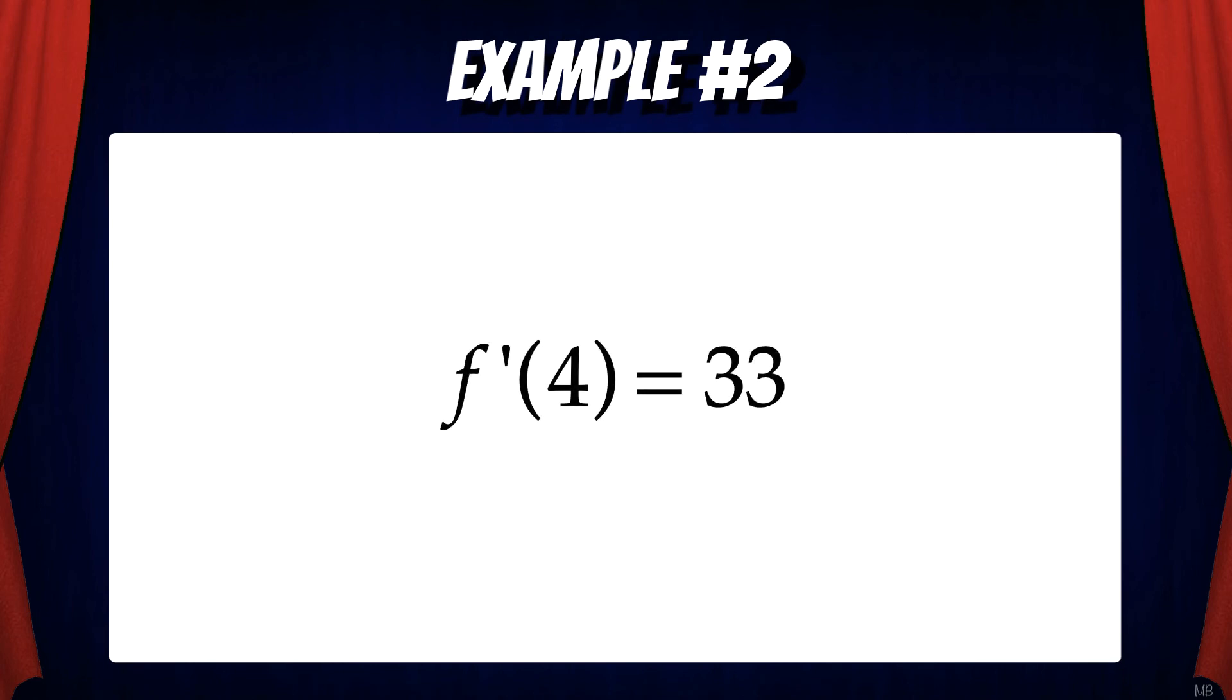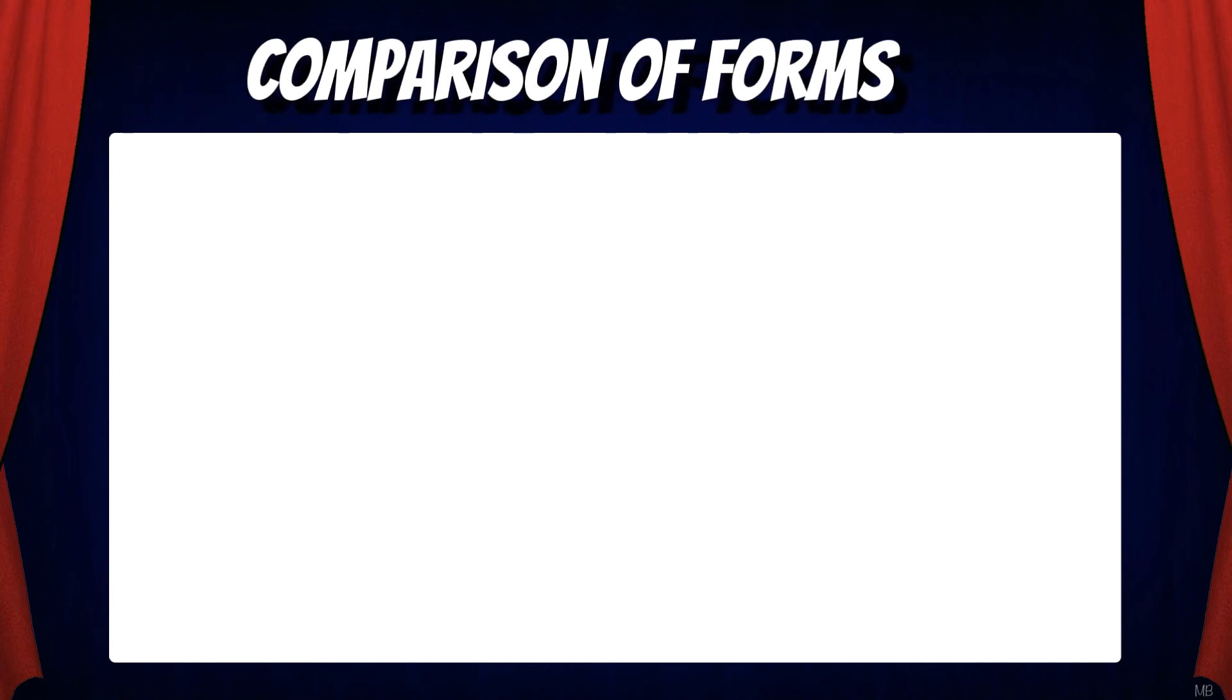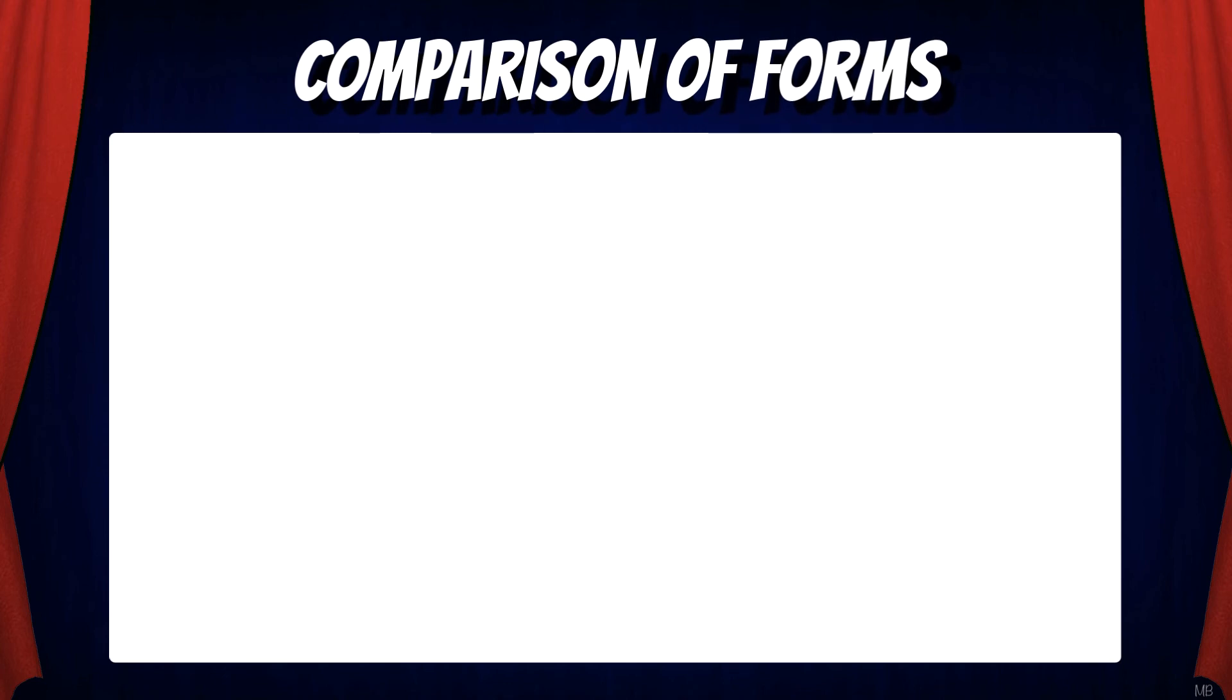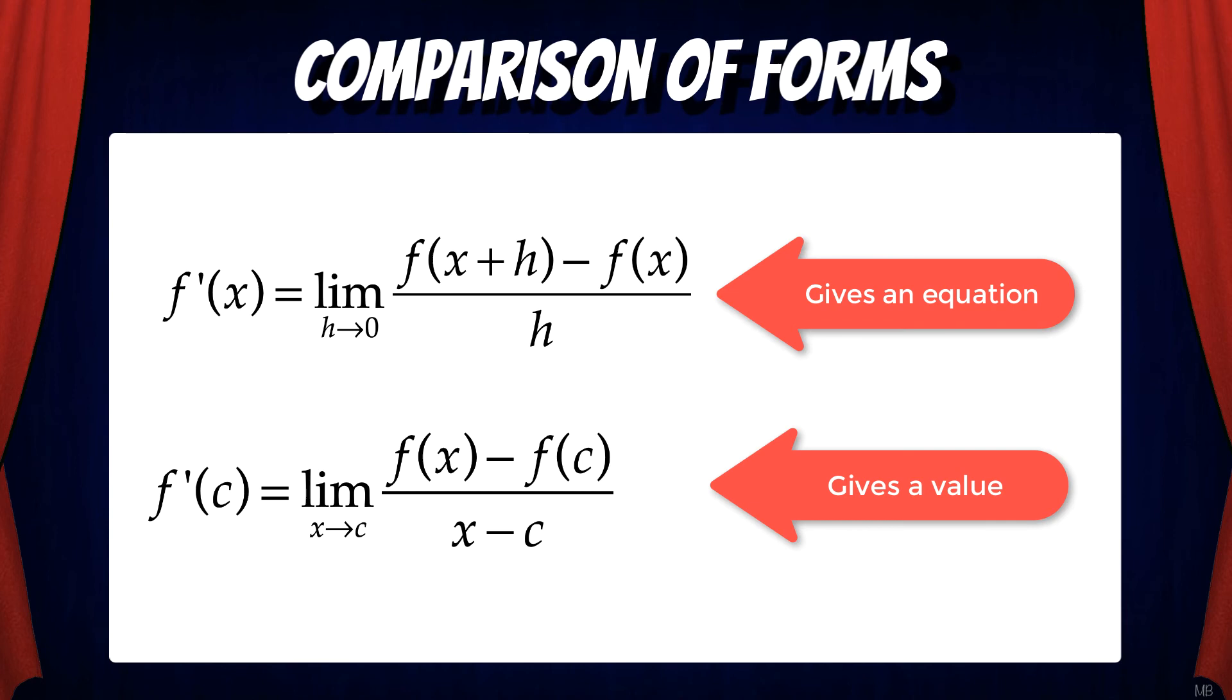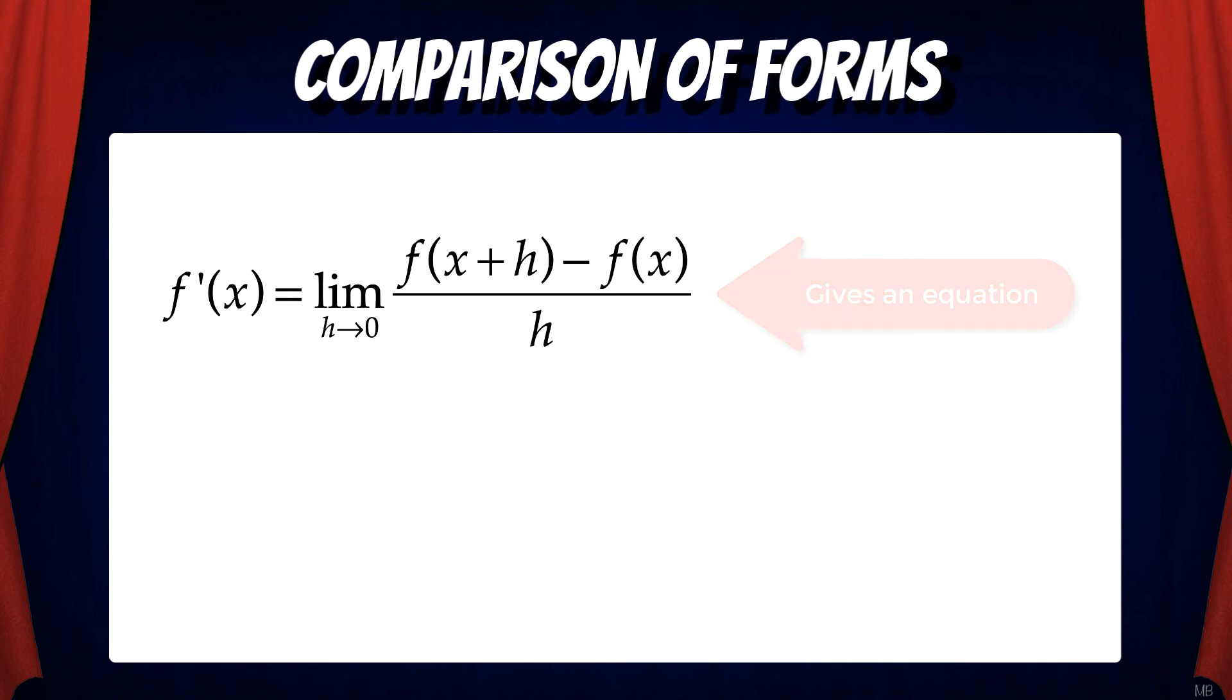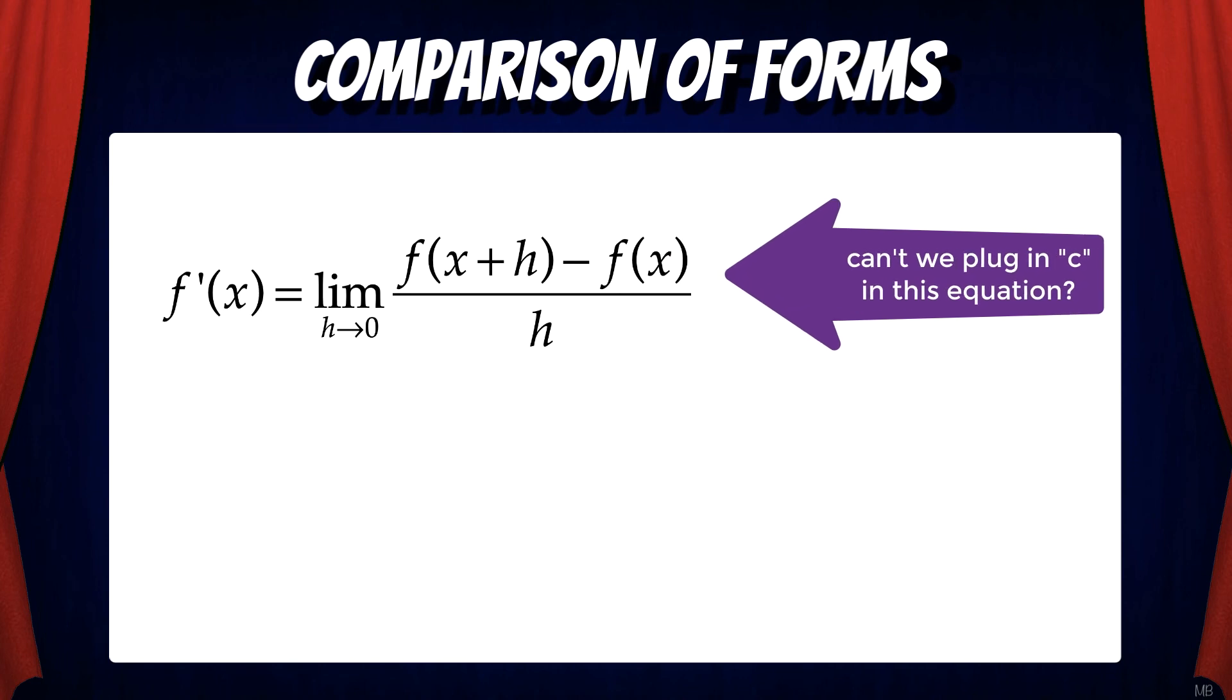In other words, f prime of 4 equals 33. So let's wrap up this video with a comparison of derivative forms. Remember, the formal definition of a derivative gives us an equation. But the formal definition of a derivative at a point gives us a value. But wait, you say, can't we just plug in c for x into the formal definition of a derivative?